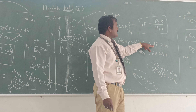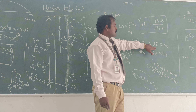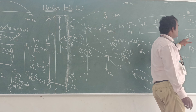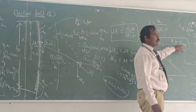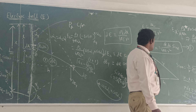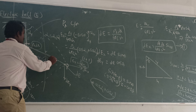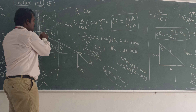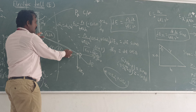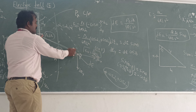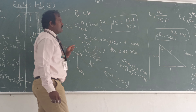We know that dE equals rho L times dL divided by 4 pi epsilon times R squared, which we substitute into the expression for dEx. So dEx equals rho L times dL divided by 4 pi epsilon times R squared, times sin theta. From the triangle formed by the line, we have angle theta, perpendicular distance H, and hypotenuse R, with the unknown distance X minus L.